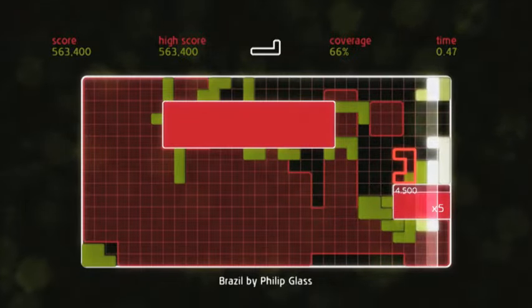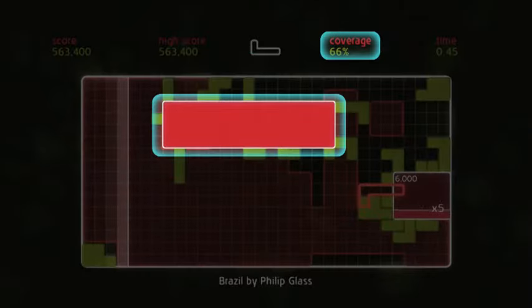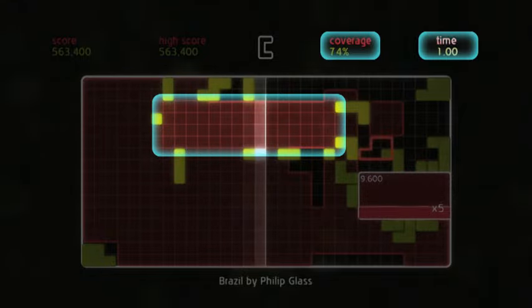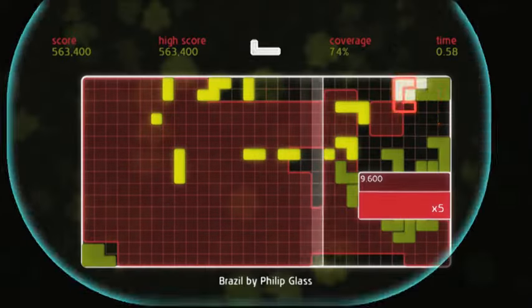Coverage is created as quads are stamped down. Increased coverage also provides time bonuses. As coverage spreads, the music track grows.